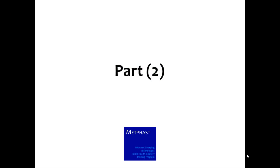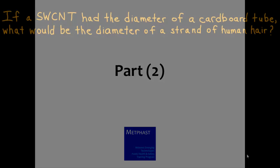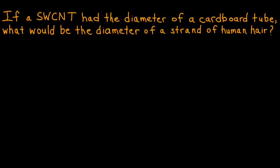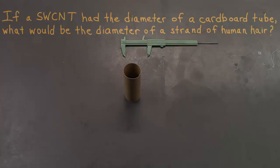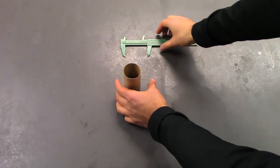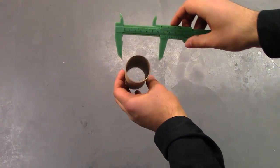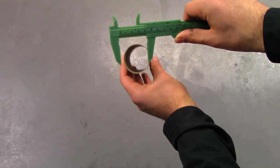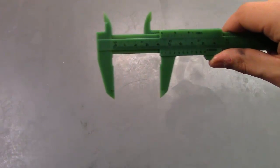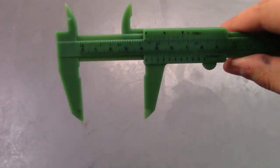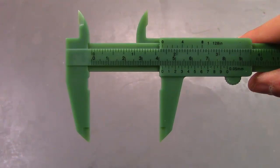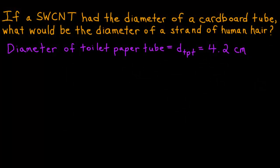In the second part of the activity, learners are asked the question: if a single-walled carbon nanotube had the diameter of a cardboard tube, what would be the diameter of a strand of human hair? The first step is to measure the diameter of a cardboard tube. Using the vernier calipers again, we can measure the diameter of the tube that was inside a roll of toilet paper. The main scale and vernier scale indicate that the diameter is almost exactly 4.2 centimeters. From part 1 of the activity, we determined that the ratio of the diameter of a human hair to the diameter of a single-walled carbon nanotube is about 100,000.